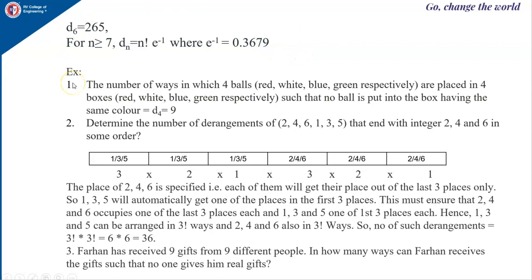Let us see some examples for derangements. The number of ways in which four balls — red, white, blue, green — are to be placed in four boxes of the same colors respectively, such that no ball is put into the box having the same color. Red cannot be put in the red box, white not in the white box, and so on. It is a derangement of four objects, so it is d4 which is equal to 9.